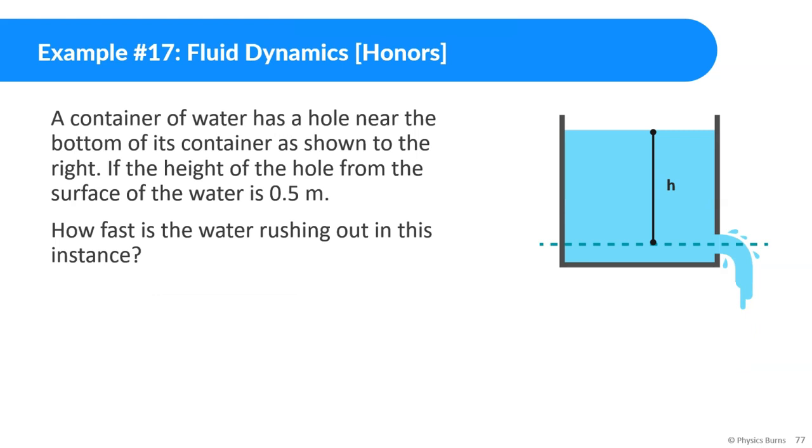Okay, so let's do some math problems here. A container of water has a hole near the bottom of this container as shown to the right. If the height of the hole from the surface of the water is 0.5 meters, how fast is water rushing out in this instance? Finally we're doing an example problem here. To figure out what this velocity is going to be equal to, we pretty much just need to find what would be the velocity of something like a ball being dropped over here, going over here. These two velocities would be the same.